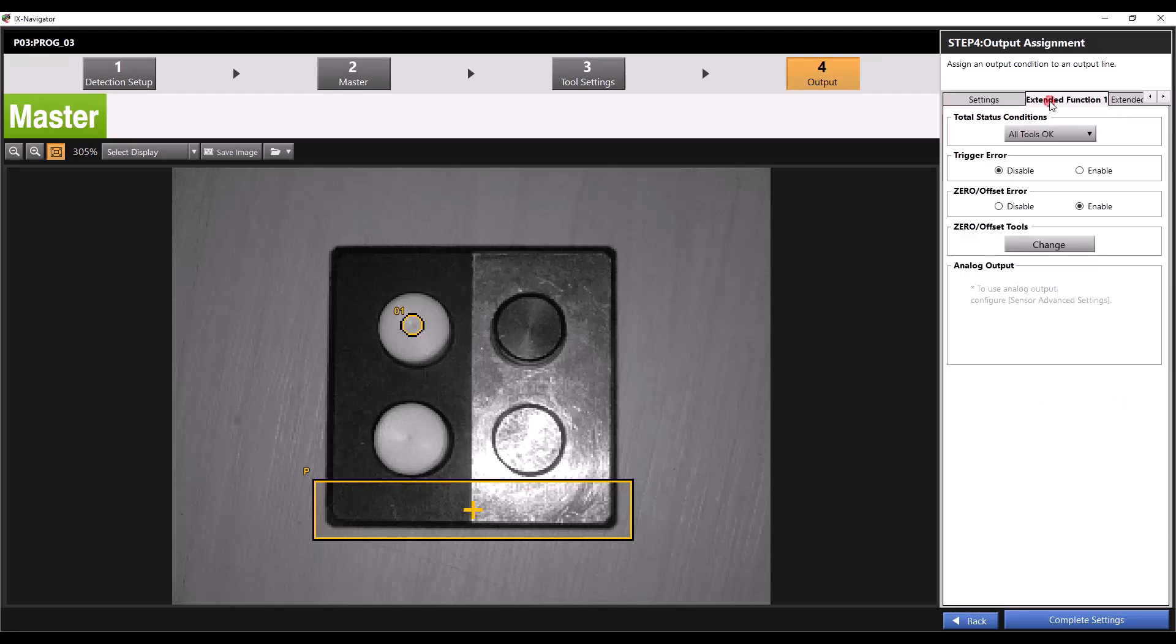In the extended functions, you have several options. First, you can set your total status conditions, which determine what conditions will turn on the total status output. By default, this is set to all tools OK, meaning all the tools in a program must have an OK reading for the sensor to give an OK judgment. Selecting any tool OK will turn on the total status OK output as long as at least one tool determines an OK reading. You can also select a logic for your total status condition, which means the total status will only be deemed OK if the selected logic conditions have been met. We'll discuss logic further in a moment.